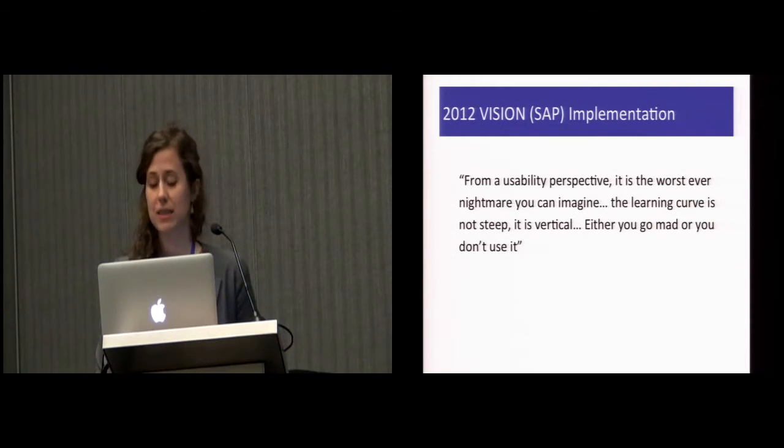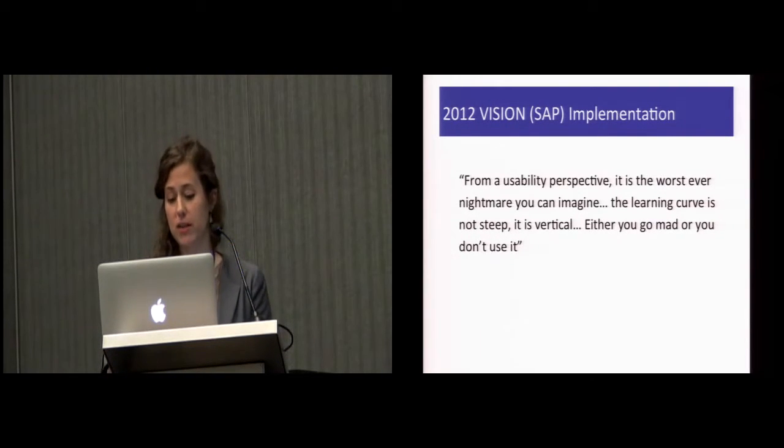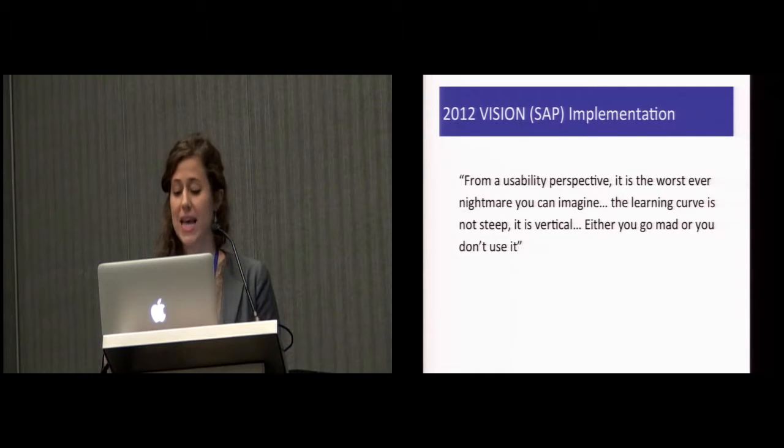First, the team has recently rolled out a large new enterprise resource planning tool in order to give headquarters more oversight into regional operations and to make data sharing easier. The team chose SAP and rolled it out in a big bang approach in January 2012 to all of the field offices.